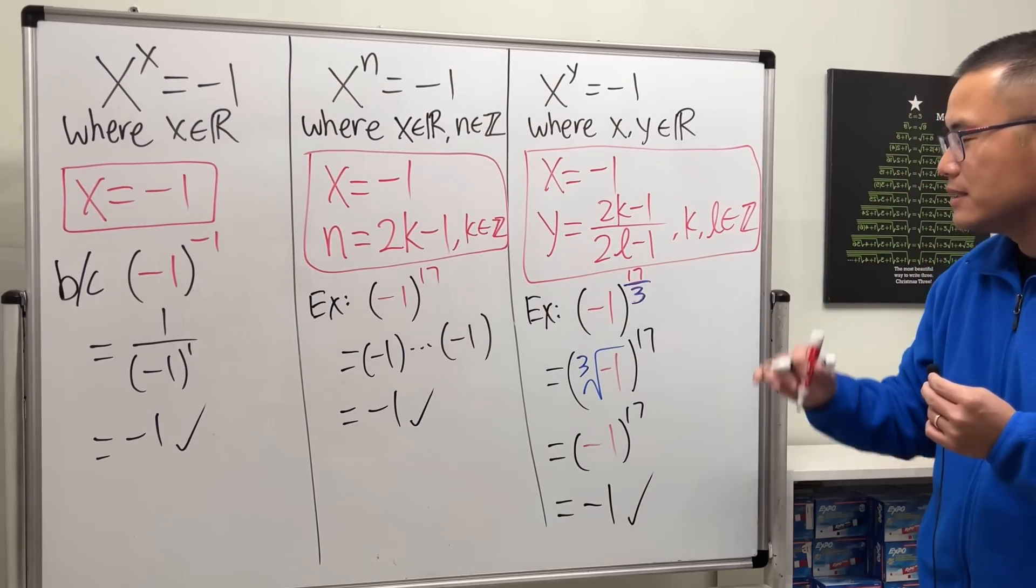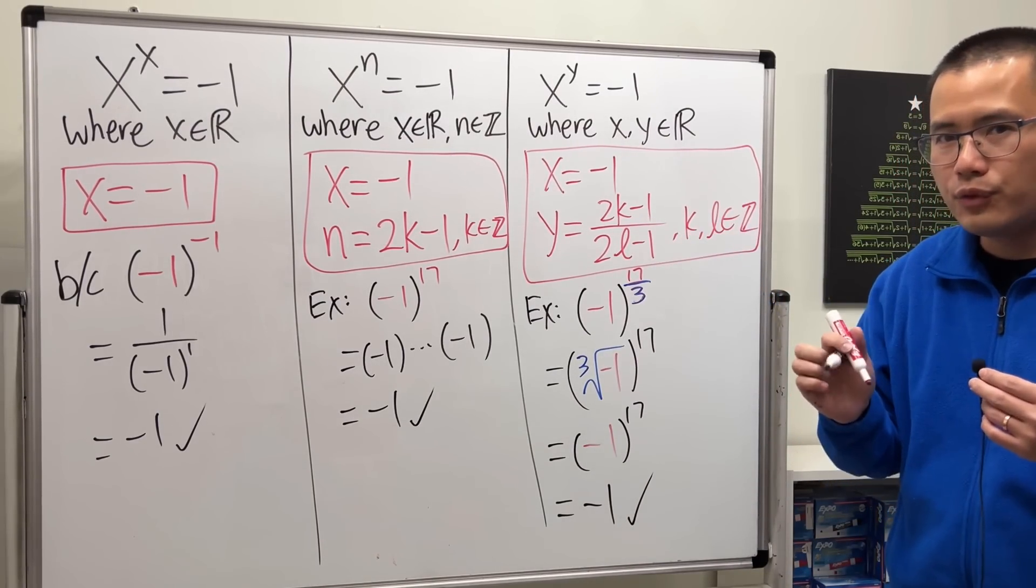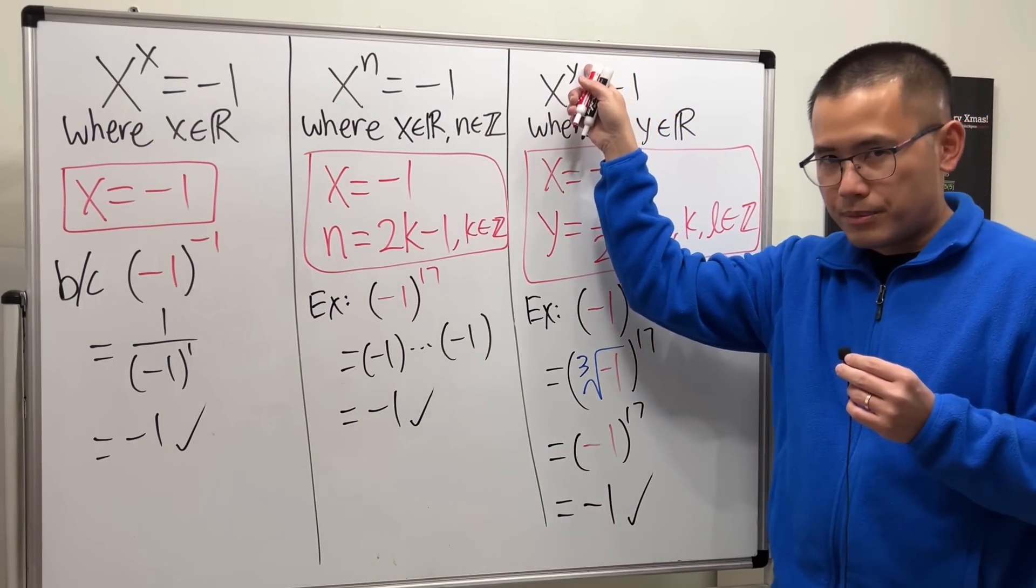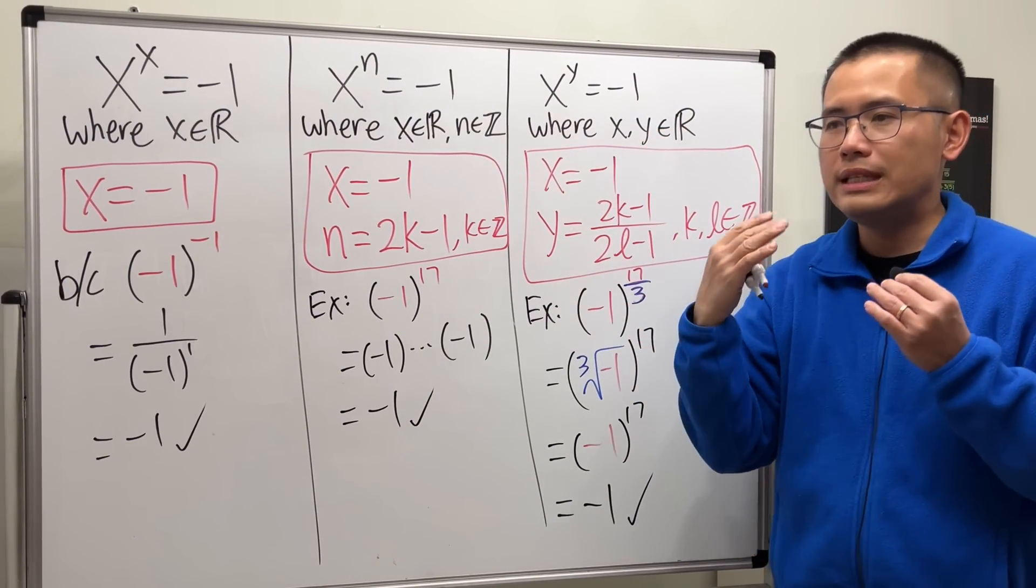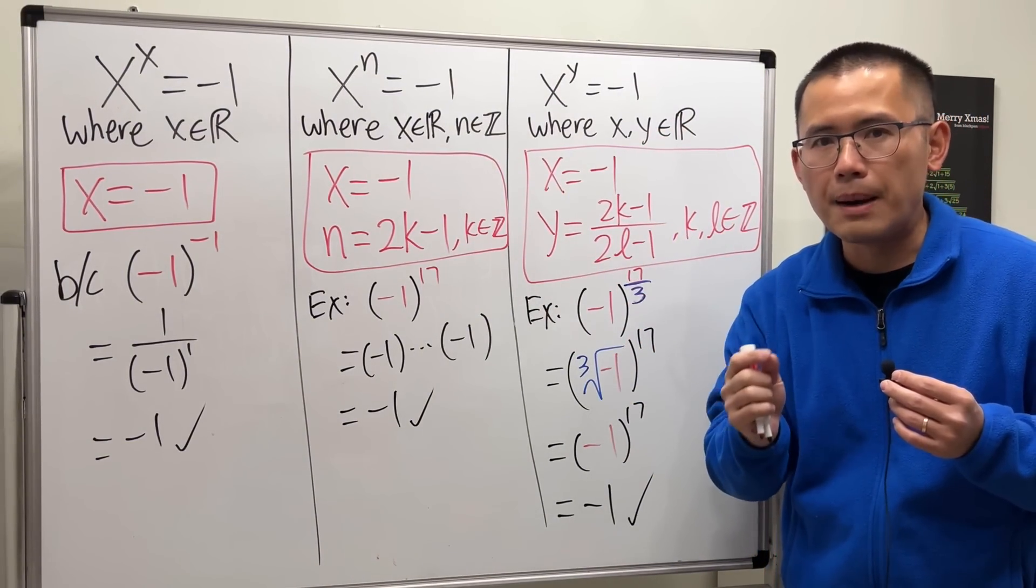Alright. Checked. And I'm pretty sure this is it. In fact, if you have an irrational number, in fact, negative 1 to an irrational number, you get a complex number.